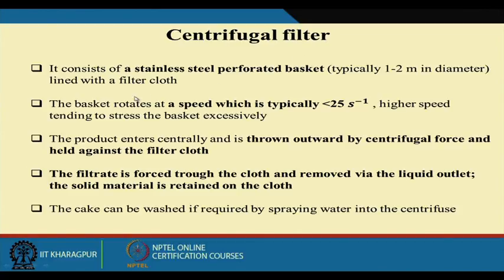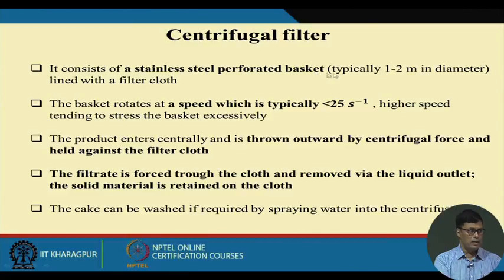Today, another solid-liquid separation process is centrifugation, which I shall talk about. The centrifugal filter consists of a stainless steel perforated basket, typically 1 to 2 meters in diameter, lined with filter cloth. We take the material inside the centrifuge and rotate it at high speed. The solid material is thrown to the surface where the filter cloth is located and accumulated there, while the liquid comes out through the perforated basket. The basket rotates at a speed of 25 per second.